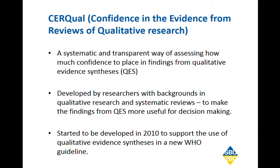CIRQL is a systematic and transparent way of assessing how much confidence to place in findings from qualitative evidence synthesis. It was developed by researchers with a background in qualitative research and systematic reviews. The idea was to make findings from qualitative evidence synthesis more useful in decision making. They started developing this methodology in 2010 to support the use of qualitative evidence synthesis in a WHO guideline.